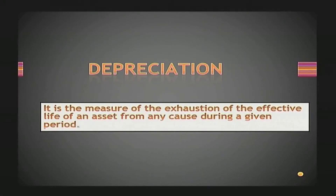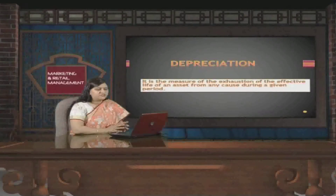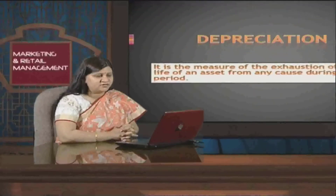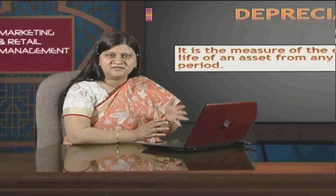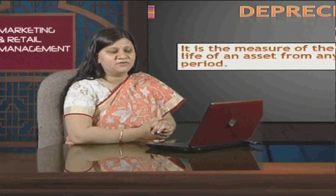Depreciation is defined as the measure of exhaustion of the effective life of an asset from any cause during a given period. What is happening here is that there is an asset which has a life — it can be five years, ten years — depending upon the economic life associated with that asset. It is being exhausted year after year, and the reason can be anything.